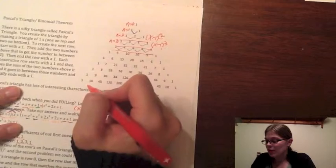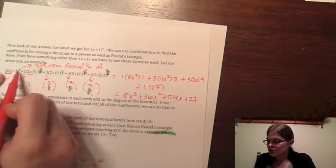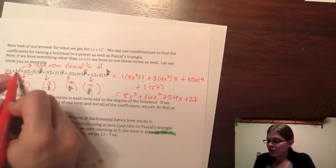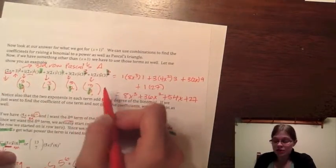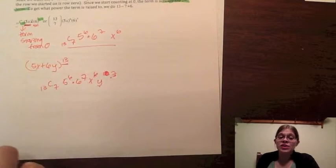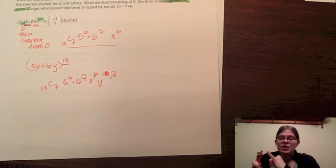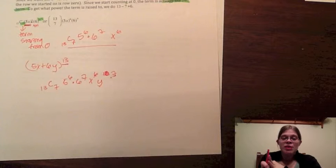So you have Pascal's Triangle — you can use the numbers in the row, remembering that rows start counting at zero. You can also use combinations to get the coefficients. Remember that you go in descending order for the first term, starting at the highest power and going down to zero, and for the last term you start at zero and go in ascending order. That should get you able to do your homework. Don't forget your calendar gives specific instructions on whether to use combinations or Pascal's Triangle.